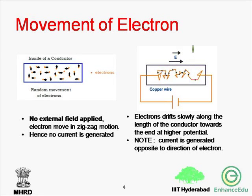The electrons that are conducting move randomly inside the conductor — their motion is like gas molecules. Since a large number of electrons move randomly, they do not have a net motion in any particular direction, and hence no current is generated. When we apply a potential difference between the two ends of the conductor using a battery, as seen in figure B, an electric field is set up inside the conductor and the electrons drift slowly along the length of the conductor from lower potential to higher potential.